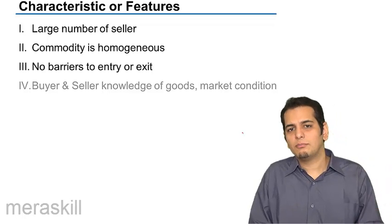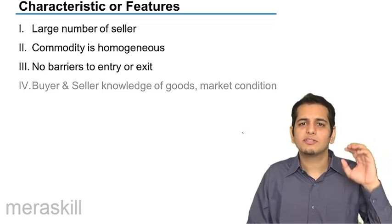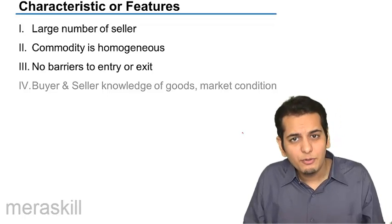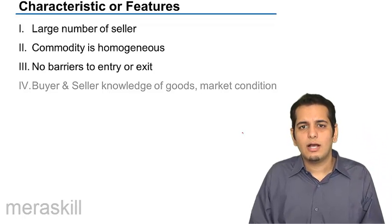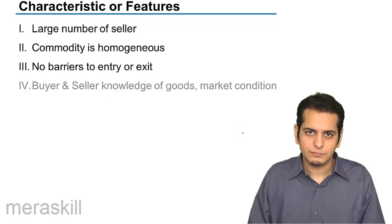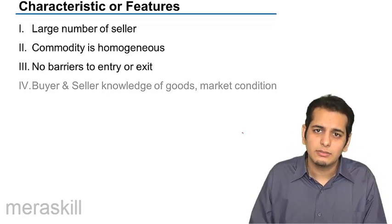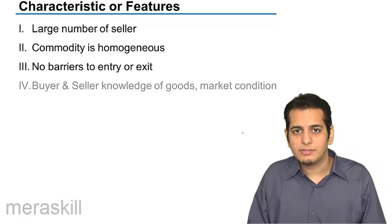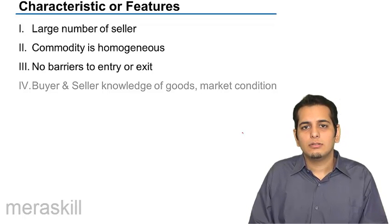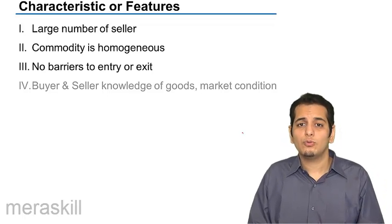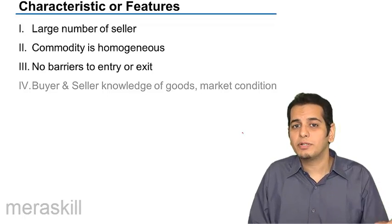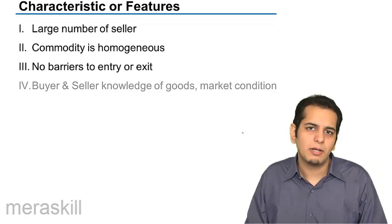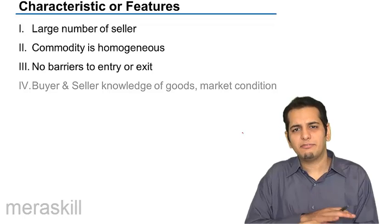The next feature is that buyers and sellers have complete knowledge about all market conditions — the goods, the price, the demand, the supply, everything. Buyers know what price sellers are charging and the technical aspects of the product. Sellers also know what price their competitors are charging, what services competitors offer, and what the demand and supply in the market are.